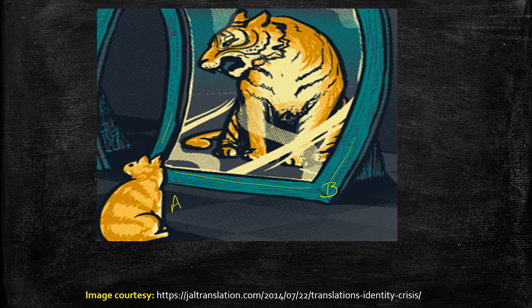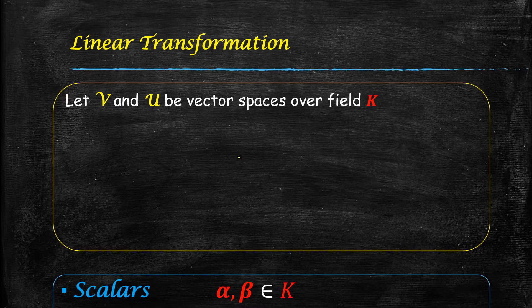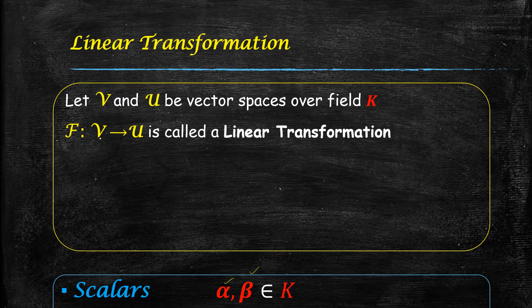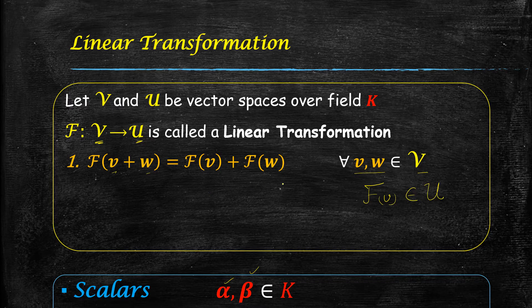Now let us move on to the definition of linear transformation. Let U and V be vector spaces over a field K, where K is either real or complex numbers, and let alpha and beta be scalars belonging to that field. Any mapping F from V to U is called a linear transformation if it preserves vector addition — that is, F(V + W) = F(V) + F(W), where V and W are elements of vector space V, and F(V) and F(W) are elements of vector space U.